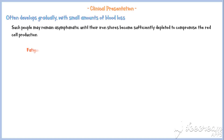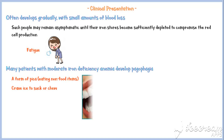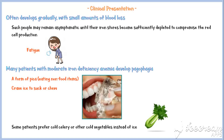At this point, patients develop fatigue, which is a common symptom for any type of anemia. Diminished oxygen-carrying capacity of blood due to the lack of hemoglobin is the reason for fatigue. Many patients with moderate iron deficiency anemia develop pagophagia, a form of pica, where they usually crave ice to suck or chew, and some patients prefer cold celery or other cold vegetables instead of ice.